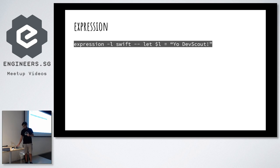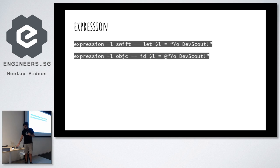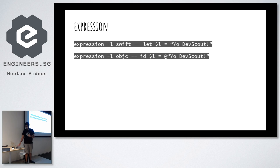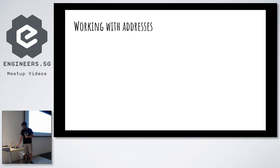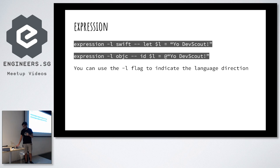One thing to keep in mind is that variables are not shared between contexts. So if you declare a variable in Swift, it won't be available in Objective-C and vice versa. You can use the `-l` flag to indicate your language.